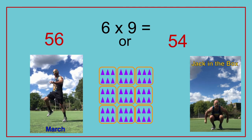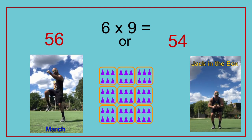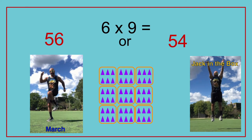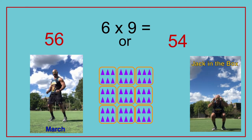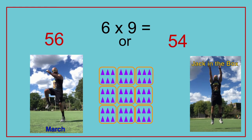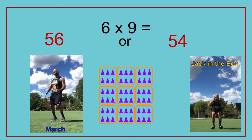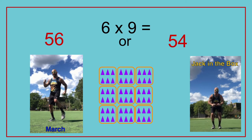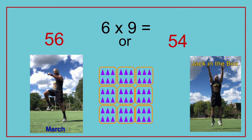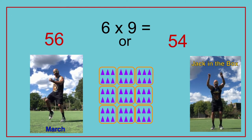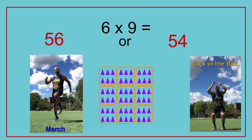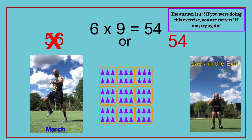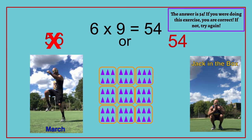6 times 9 equals — 56 or 54? The answer is 54. If you are doing this exercise, you are correct. If not, try again. 6 times 9 equals 54.